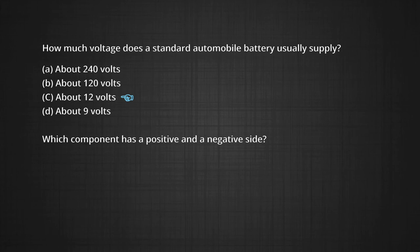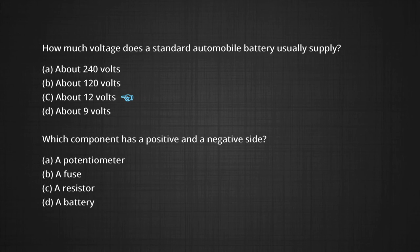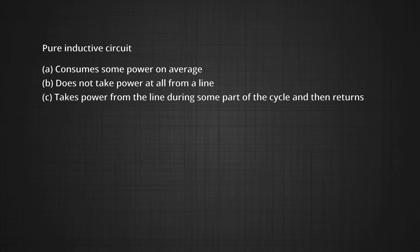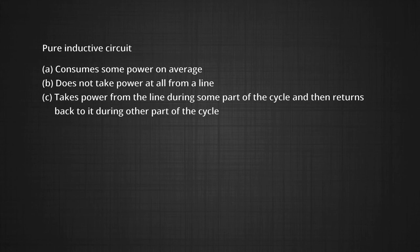Next, can you guess which component has a positive and negative side? The options are a potentiometer, a fuse, a resistor, or a battery. The answer is battery. One more: for a pure inductive circuit, does it consume some power on average, take no power at all from the line, or take power from the line during some part of the cycle and then return it during the other part? The answer is it takes power from the line during some part of the cycle and then returns it during the next cycle.